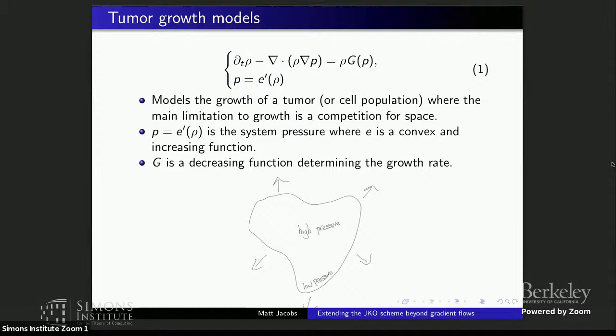These cells are growing, they don't really like touching each other, they sort of push each other around, and that induces a pressure. Basically, you should think that this pressure is like some increasing function of the density, and it's going to push the cells. But of course these are tumor cells — they should be growing. So we have this growth term, which is a decreasing function of the pressure.